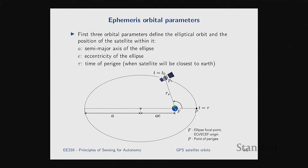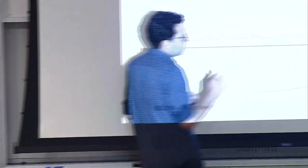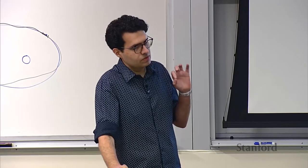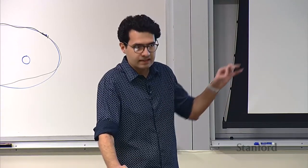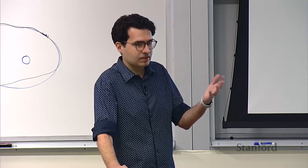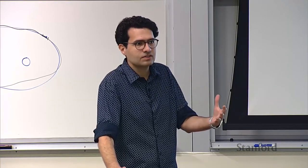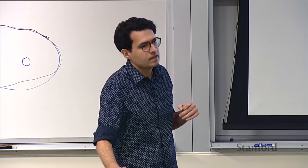A student asks how the satellite knows the point of perigee. The answer is that there is a very important part of the GPS system — the ground system. There is a network of ground stations that monitor the satellites and constantly communicate with them. A lot of these orbital calculations are done on the ground and then transmitted to the satellites. By today's standards, solving these differential equations is not computationally heavy — it can run on a cell phone — though in the 1970s it was considered more demanding.